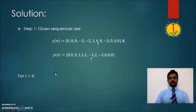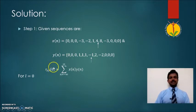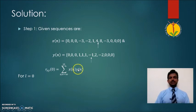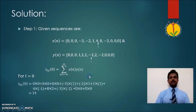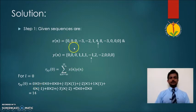Let us substitute L equals zero in the standard equation of cross correlation to find the cross correlation between X and Y for the zero sample. The equation becomes nothing but the multiplication of the two sequences and summation from N equals minus infinity to plus infinity. We multiply the different samples of X(N) and Y(N), and after doing this mathematical operation we get the result.